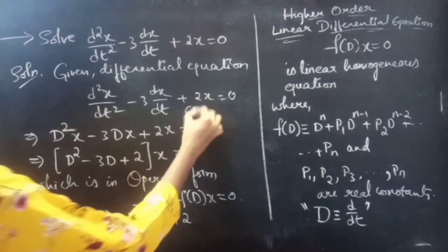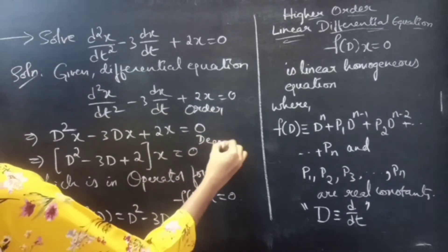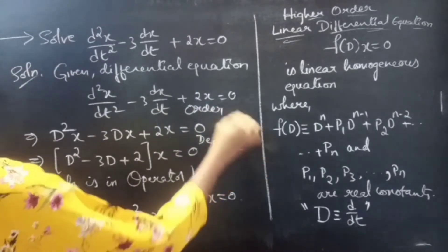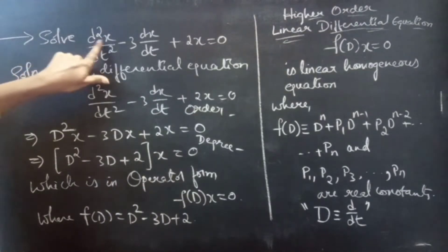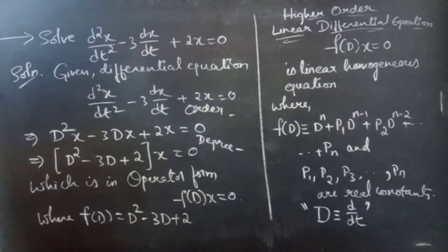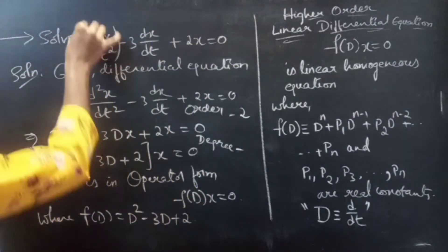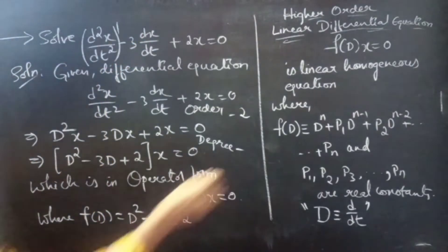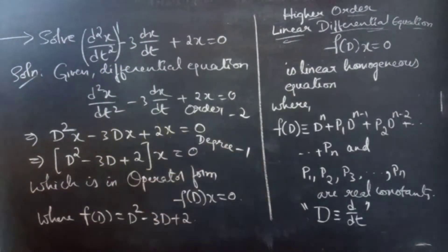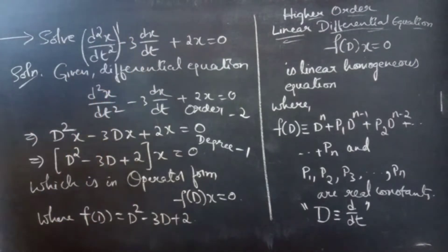Now let's find the order and degree of the given equation. The highest derivative is d²x/dt², so the order is 2. The power of the highest derivative is 1, so the degree is 1.